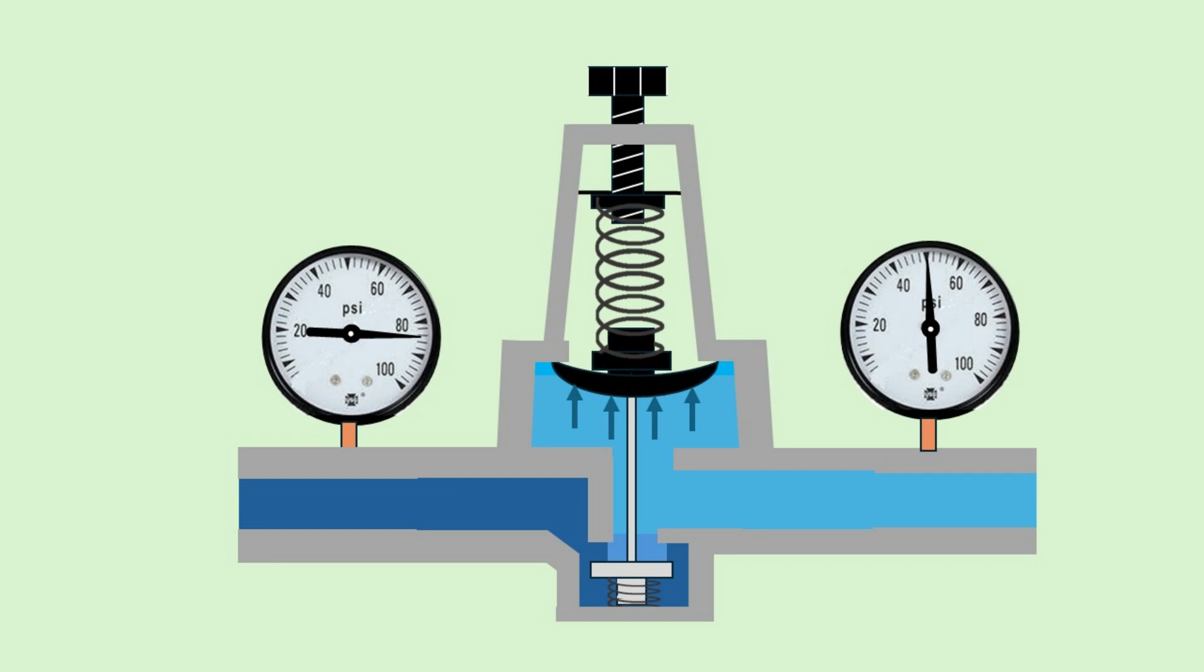Now let's look at what happens when the inlet pressure suddenly increases. Here, the inlet pressure suddenly jumps from 85 PSI to 110 PSI. Note, in reality, this happens instantly, but I'm showing it step by step to make it easier to follow. This higher pressure pushes against the diaphragm with more force. This causes the diaphragm to move upward slightly.